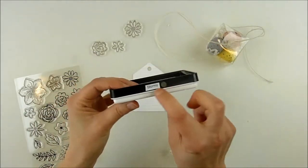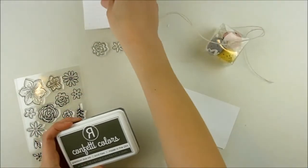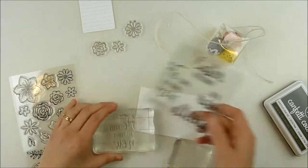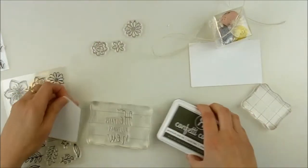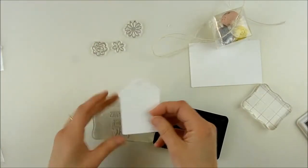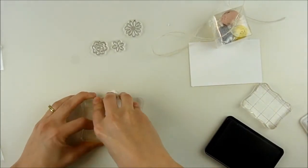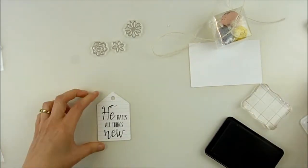I'm going to add some florals using Build-A-Bunch, and I'm using Stormy dye ink to stamp both my sentiment and my flowers. My sentiment's coming from Easter Blessings, and this tag, even though it has the stitched lines in it and some texture, a large bold sentiment like this still stamps nice and clear and is easy to read on there.